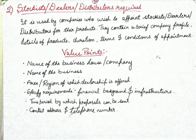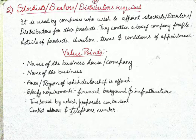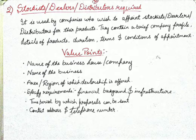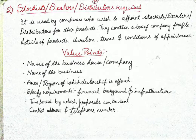The value points for this advertisement are: the name of the business house or company, the type of business, the area or region for which dealership is required or offered — such as northeast or northwest. The specific requirements include financial background and infrastructure. You must mention the time period by which proposals can be sent, and your contact address and telephone number.